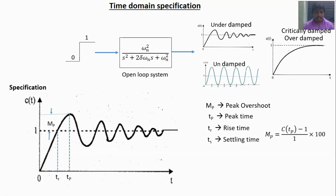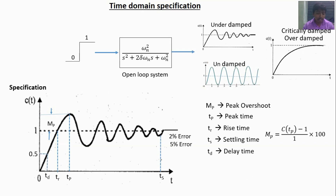The fourth specification is settling time, defined as the time taken to reach the final value within either a 2% error or 5% error of the desired value. The fifth specification is delay time, defined as the time taken to reach 50% of the desired value for the very first time. These five specifications are very important in time domain analysis.